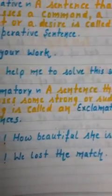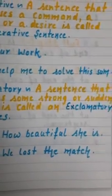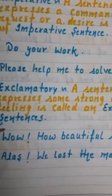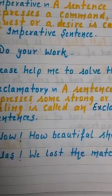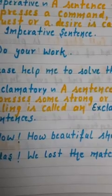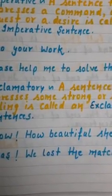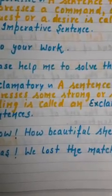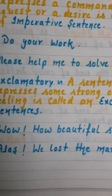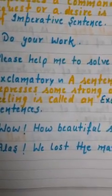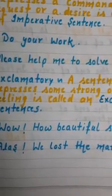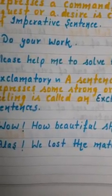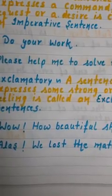Now, exclamatory sentences. A sentence that expresses strong or sudden feelings is called an exclamatory sentence. Sometimes we see something surprising and react strongly. We use certain words like 'Wow!', 'What a beautiful flower!', 'Alas, we lost the match!', 'Shh, the baby is sleeping!' These words are interjections and these are exclamatory sentences.